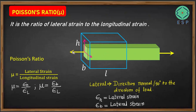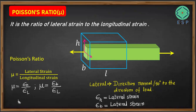Here, the direction of load is along the length, so along the height it is a lateral strain and along the breadth it is also a lateral strain. Hopefully it is clear what Poisson's ratio is. Normally the Poisson's ratio has a definite value — Poisson's ratio takes values from minus 1 to 0.5.